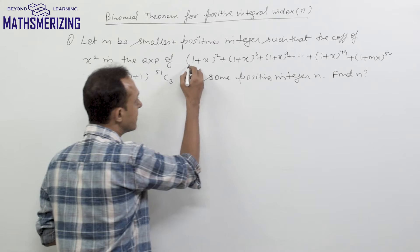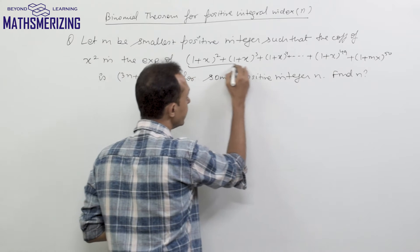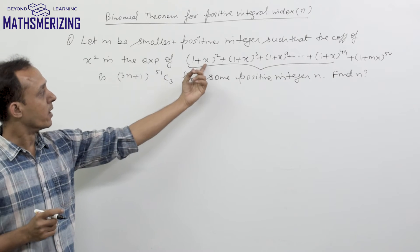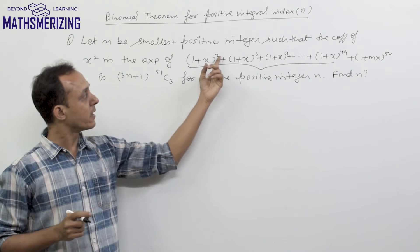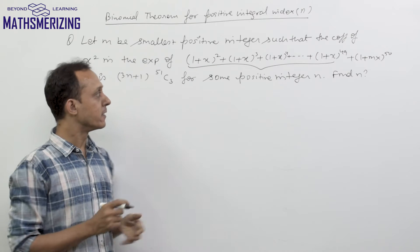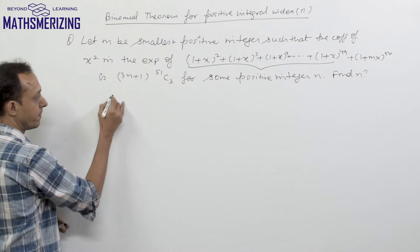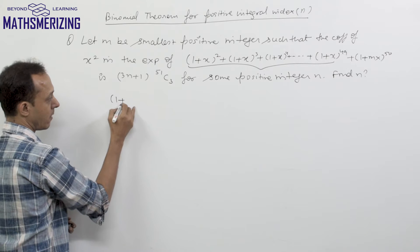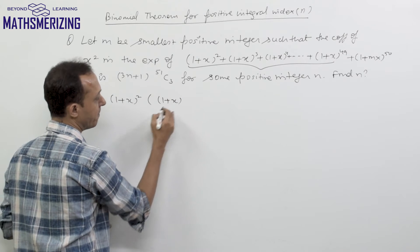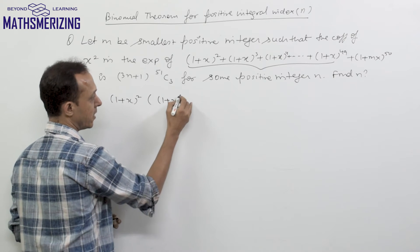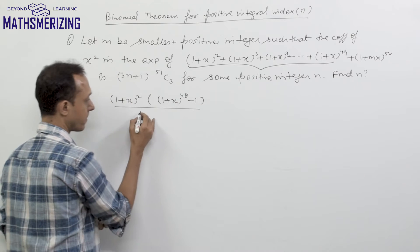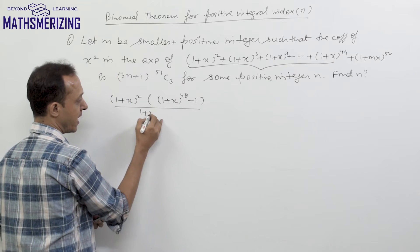First, I'll simplify the series. It's a geometric progression. The first term is (1+x)², the common ratio is (1+x), and the number of terms is 48. So I'll write a·(r^48 - 1)/(r - 1), which gives (1+x)²·((1+x)^48 - 1)/((1+x) - 1).